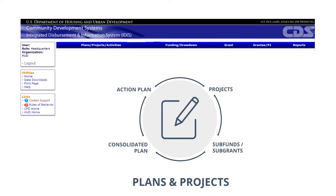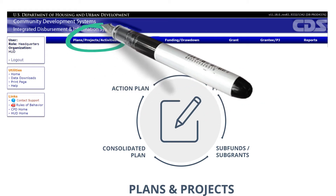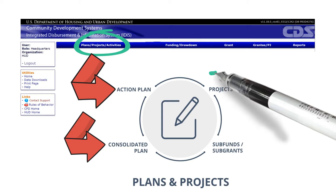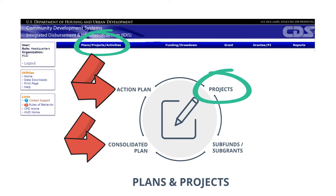First, let's talk about the Plans, Projects, and Activities tab. The Consolidated Plan and the Annual Action Plan can be developed, viewed, and submitted in this tab. HTF grantees are required to submit an HTF allocation plan as part of their Consolidated Plan and Annual Action Plan. After planning has been completed, Action Plan projects become the framework within which specific IDIS activities are set up. For more information on Consolidated Plan and Annual Action Plans, view the Resources section of this training page.